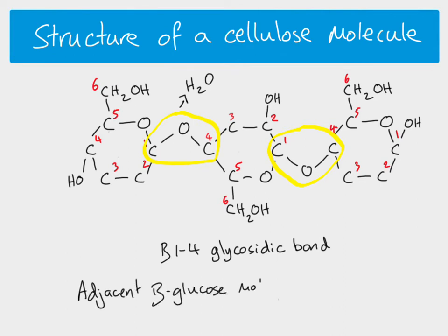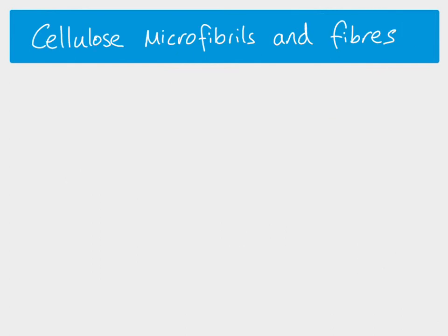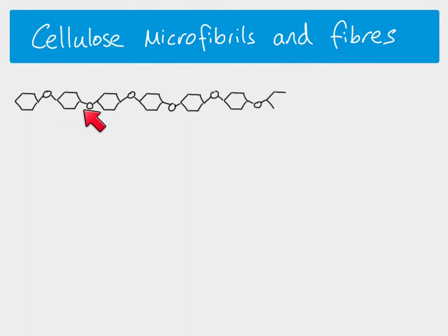To summarise: adjacent beta glucose molecules are rotated 180 degrees. That's a cellulose molecule — a straight chain polymer of beta glucose. Those molecules are then arranged into structures called microfibrils and fibers, so the structures get bigger.